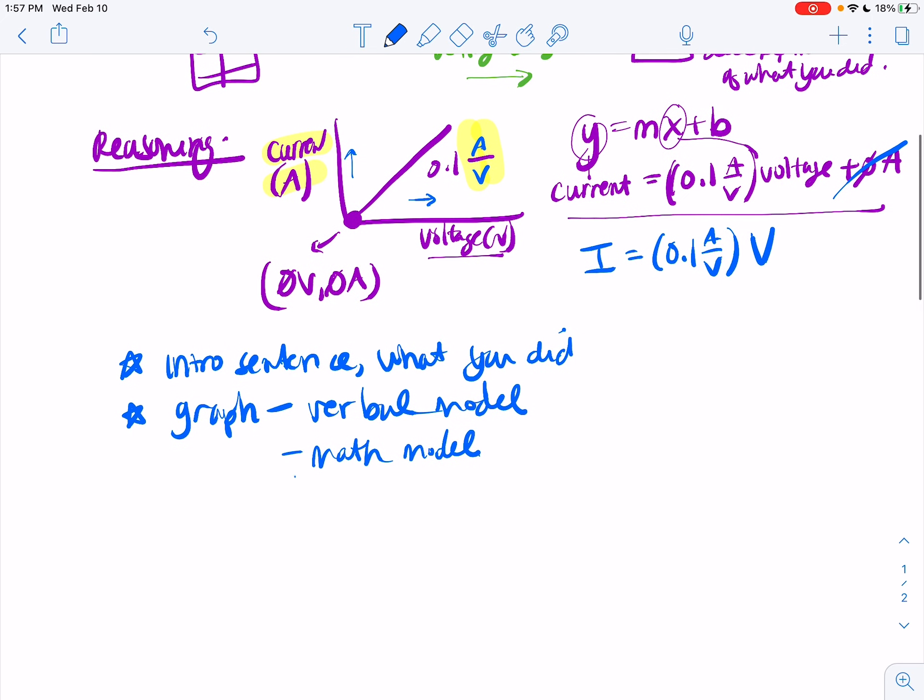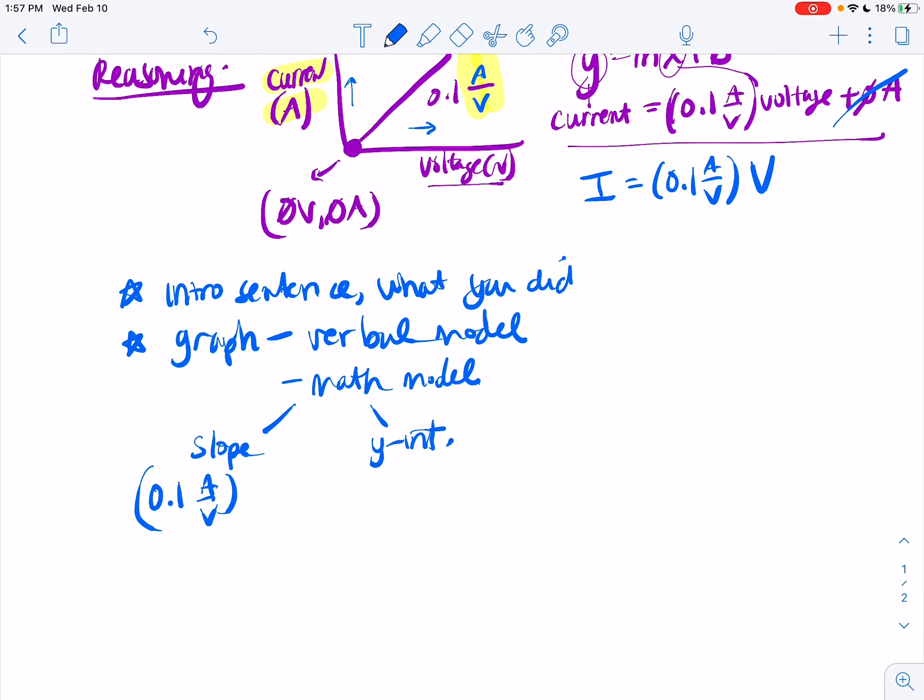And then as part of your math model, you want to explain the slope and the y-intercept. So the slope being 0.1 amps per volt, which if we write that for every statement, for every one volt increase the current increases by 0.1 amps. So you want to explain what the slope means in a statement.